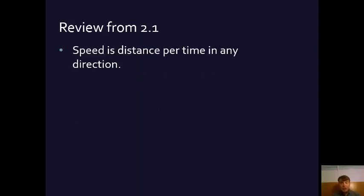So first, a little review from section one of this chapter. Speed, as you know, is distance per time in any direction. How many miles per hour can your car go? Speed, if you remember from chapter one, is a scalar quantity. That means it doesn't necessarily specify direction.